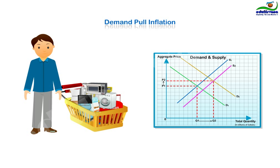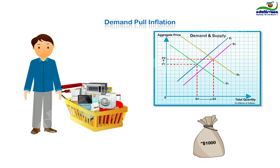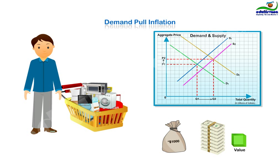Because, even though suppliers also would have got those money bags, they cannot increase the factory capacity and hiring of labour in one day. As a result, prices rise from P1 to P2 exorbitantly and, relatively, quantity produced in an economy rises minutely from Q1 to Q2. So, money will lose its purchasing power and suddenly your people will realise that these money bags are worth nothing.